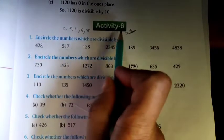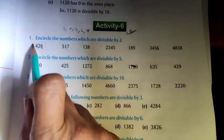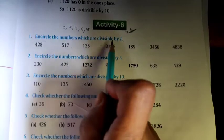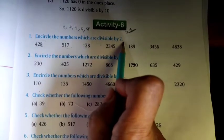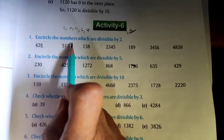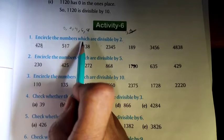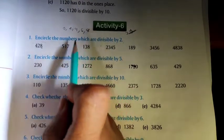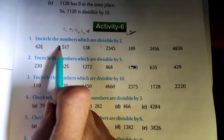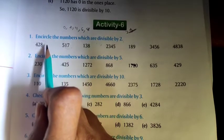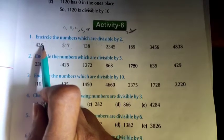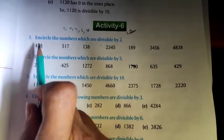Let's start activity 6, question number 1. Uncircle the numbers which are divisible by 2. Children, you should remember the divisibility rule of 2. When the number is an even number, then it is divisible by 2.